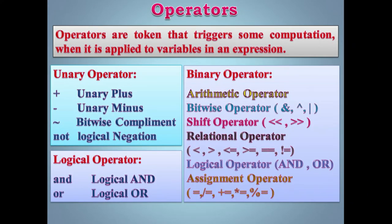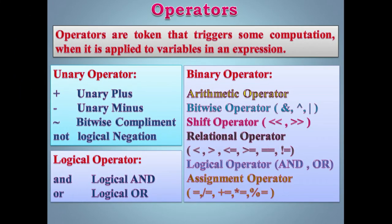And, or se gates bante hain — jaise physics mein padha hoga 12th class mein — logical gates. And gate, or gate, nor gate, not gate — ye sab combination se circuit boards bante hain. Binary operator ke andar bahut saare operators aate hain, jaise arithmetic operators: plus, minus, multiplication, division, modulo, exponent. Bitwise operator — bitwise exclusive (XOR), bitwise OR (pipe sign).